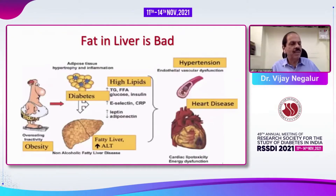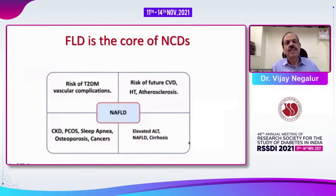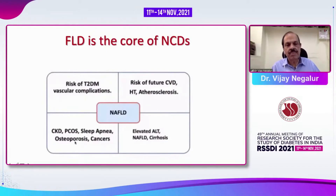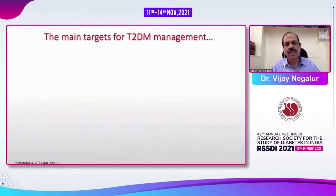Fat in the liver is bad — it can cause diabetes, fatty liver disease, dyslipidemia, hypertension, and eventually heart disease. NAFLD is a core factor for diabetes development and increases the risk of cardiovascular disease, hypertension, atherosclerosis, chronic kidney disease, PCOS, sleep apnea, osteoporosis, cancers, and elevated ALT levels.